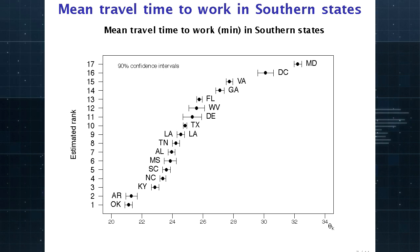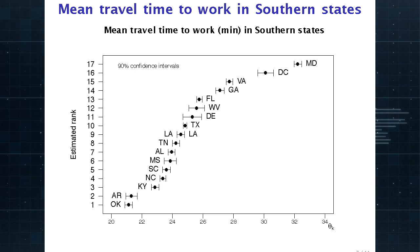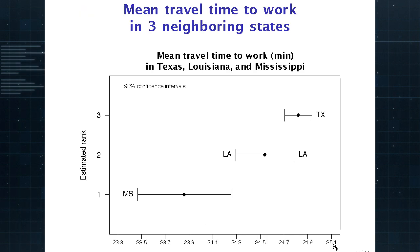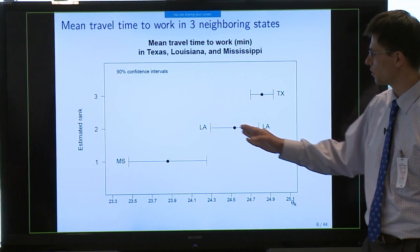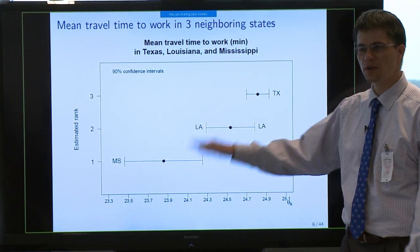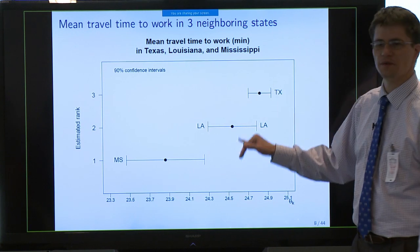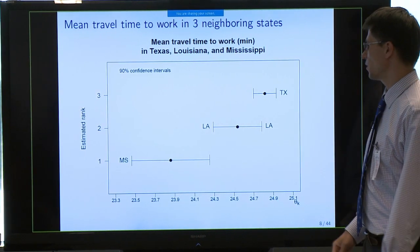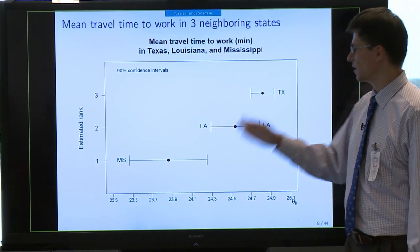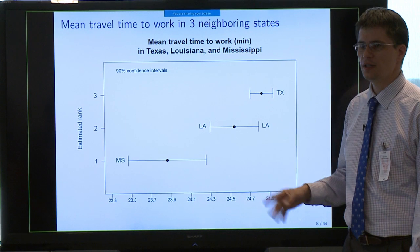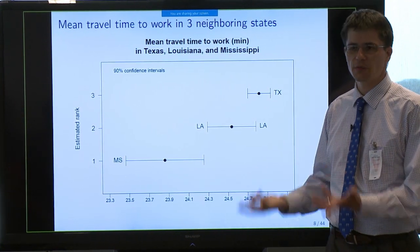Same for Louisiana and Mississippi — they're very close, but they do not quite overlap. Mississippi's confidence interval upper end is just to the left of the lower end of Louisiana's confidence interval, so they do not overlap, whereas Louisiana and Texas do have intervals that overlap. So the question is: can we really rank all three of these states? Do we know this is the correct order, or should these be flagged as not significantly different and given the same rank?